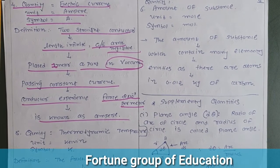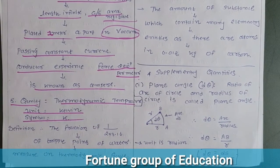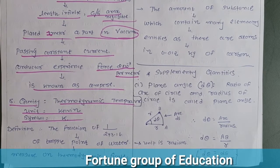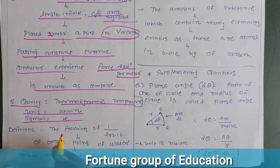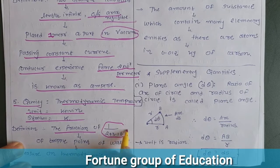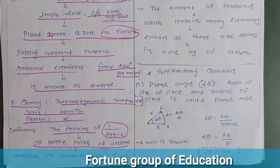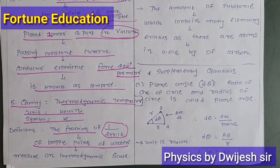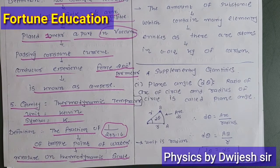The fifth base quantity is thermodynamic temperature. The unit is kelvin and the symbol is capital 'K'. Temperature can be measured in kelvin, Celsius, or Fahrenheit. The definition of kelvin: it is the fraction 1/273.16 of the thermodynamic temperature of the triple point of water. The triple point refers to the point where sublimation, fusion, and vaporization occur simultaneously.